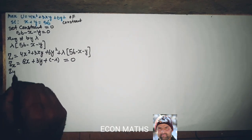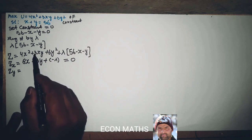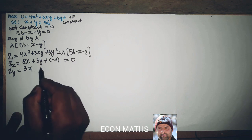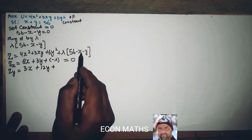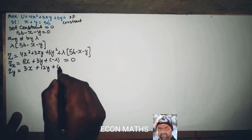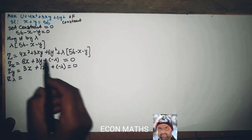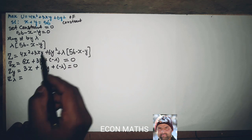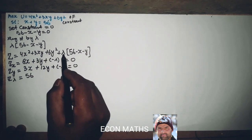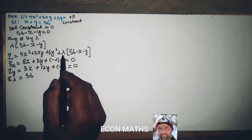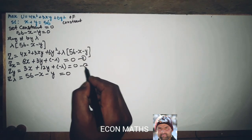Partially differentiating with respect to y: the derivative of 4x squared is zero, plus 3x, plus 12y, plus lambda times minus y gives minus lambda. Set equal to zero: 3x plus 12y minus lambda equals zero. Partially differentiating with respect to lambda gives 56 minus x minus y equals zero. Let these be equations one, two, and three.